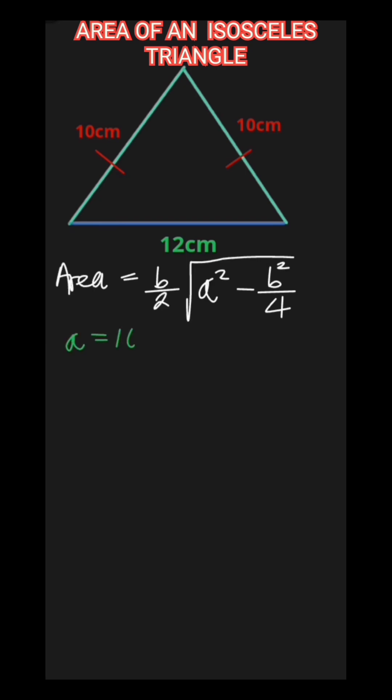A is 10 centimeters, one of the equal sides in this case, and B is the base length, which is 12 centimeters here. So the area of this isosceles triangle is 12 centimeters over 2 times the square root of 10 centimeters squared minus 12 centimeters squared over 4.